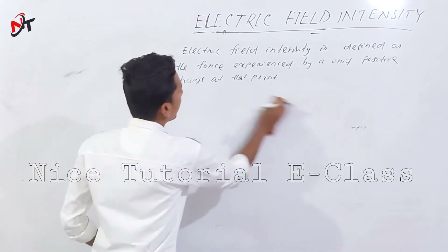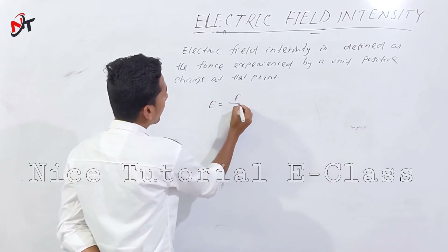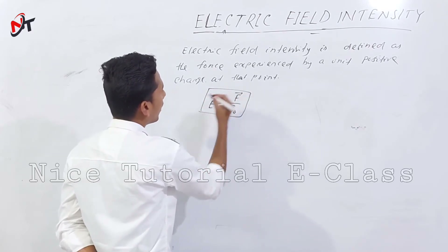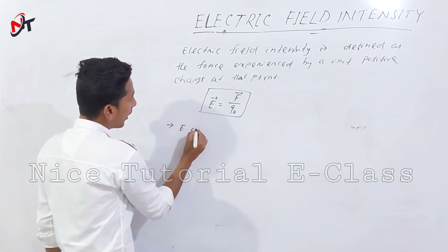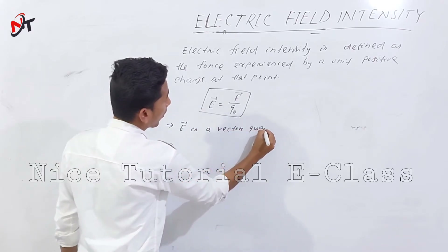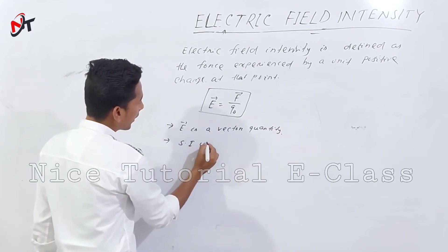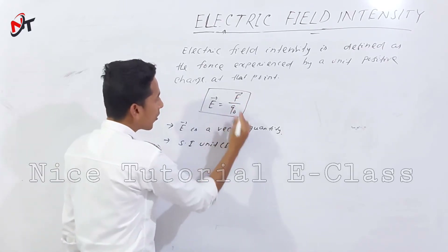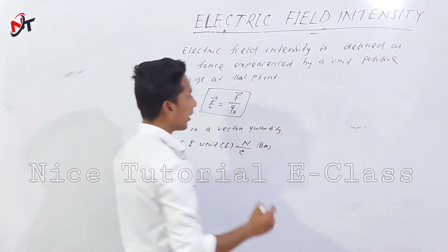Mathematically, we represent electric field intensity as E = F upon Q₀. This is a vector quantity — it has direction. The unit is Newton per coulomb, force unit divided by charge unit.